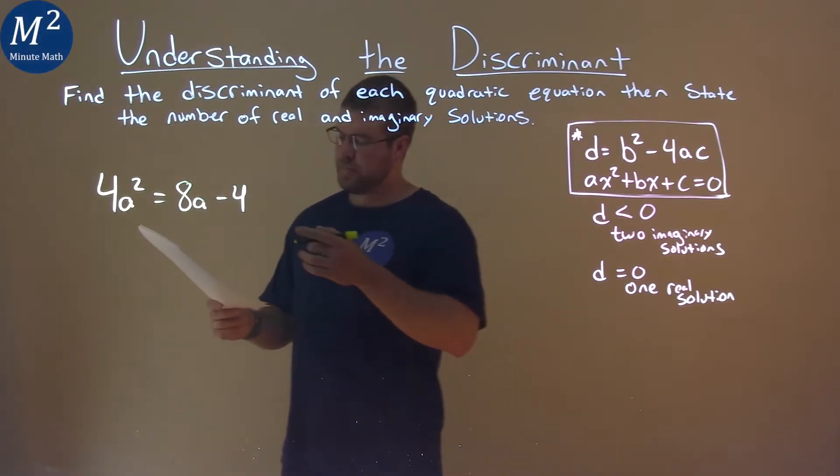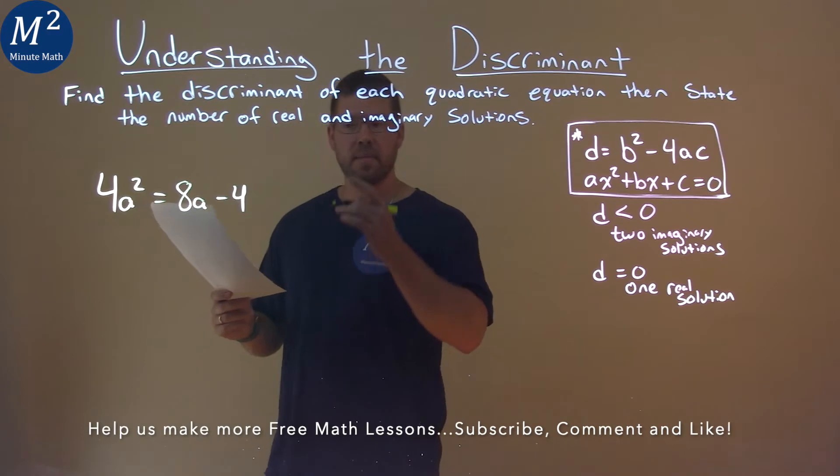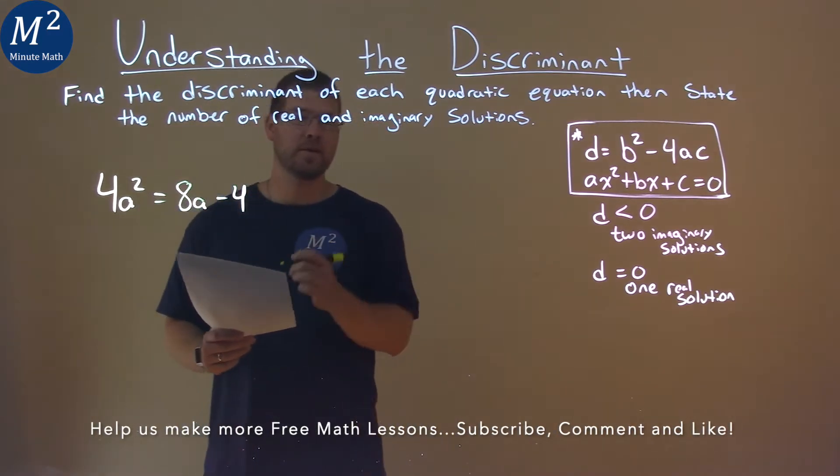We're given this problem right here: 4a squared equals 8a minus 4, and we need to find the discriminant.